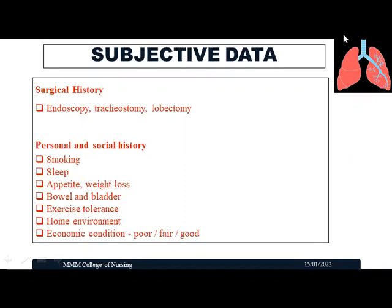To summarize, personal and social history items include smoking, sleep pattern, appetite or weight loss, bowel and bladder pattern, exercise tolerance, home environment, and economic condition of the patient.